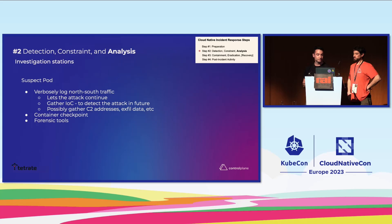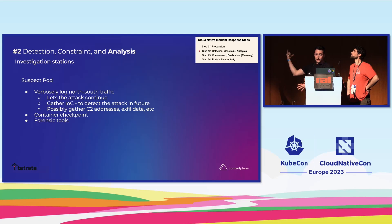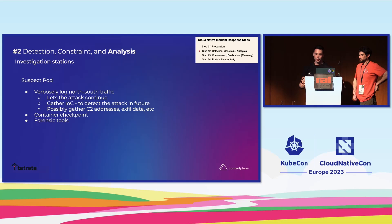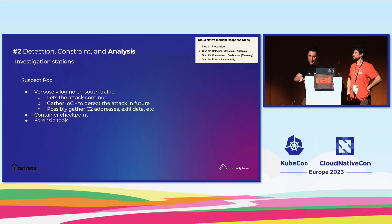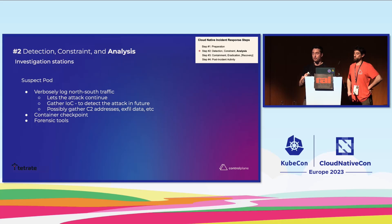Moving to analysis of the suspect pod: we want to verbosely log the north-south traffic — we let the attack continue but crank up logging to gather the indicator of compromise and see what C2 addresses are being contacted or what data is being exfiltrated. We then want to checkpoint the container quickly, before doing anything invasive that might leave a trail. If authorities get involved, they'll want that clean image. Then we get in with forensic tools to look around — potentially using ephemeral debug containers.